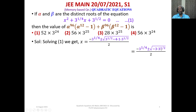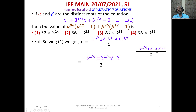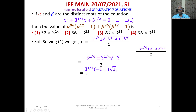We bring 3^(1/2) out from under the square root, which gives 3^(1/4). This yields x = −3^(1/4) ± 3^(1/4)·√(−3), which simplifies to 3^(1/4)·(−1 ± i√3) / 2.